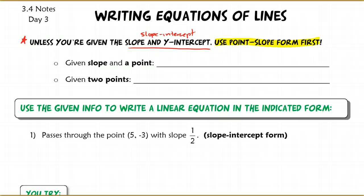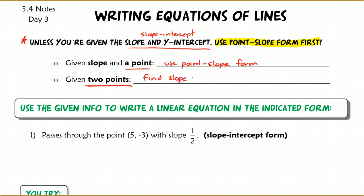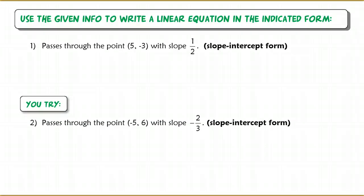If you're given a slope and a point — and this point is just a normal point, not the y-intercept — you're going to use point-slope form first. If you're given two points, we're missing some information; we need to find the slope first, and then use point-slope form. I'm going to do one example and then have you try the other one. You can check your answer with the key.